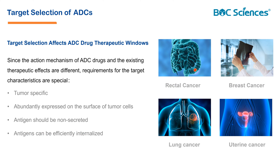Target selection will affect the therapeutic window of ADC drugs. Improving ADC safety and efficacy relies significantly on selecting the target antigen and its interaction with the MAB. Critical parameters include tumor specificity and expression level. Ideally, the chosen target will exhibit high tumor-specific expression and minimal presence in normal tissues. The antigen can be expressed as a surface receptor on tumor cells, tumor stem cells, or within the tumor vasculature and microenvironment. Homogeneous antigen expression across tumor cells is preferred, though ADCs with sufficient bystander effect control may overcome heterogeneous cell populations within a tumor.